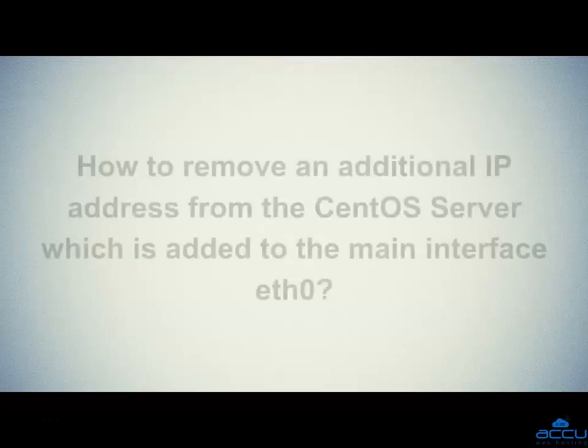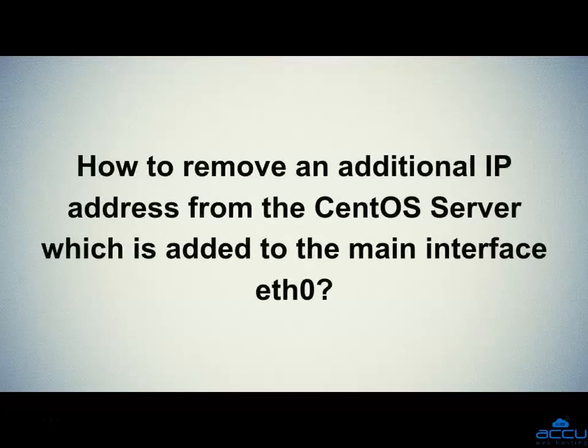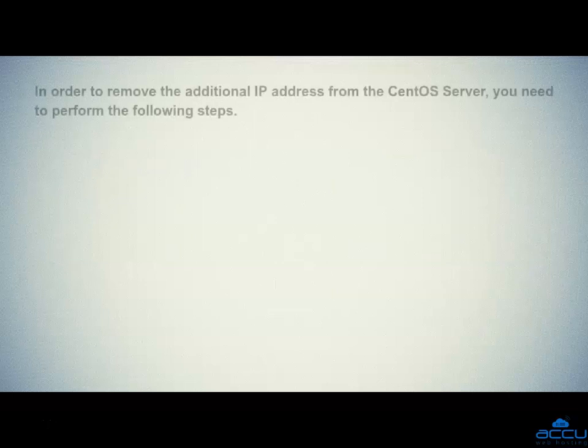Now we will see how to remove an additional IP address from the CentOS server which is added to the main interface eth0. In order to remove the additional IP address, you need to perform the following steps.